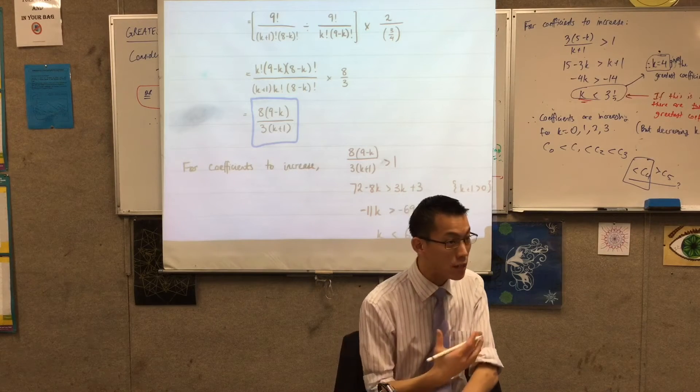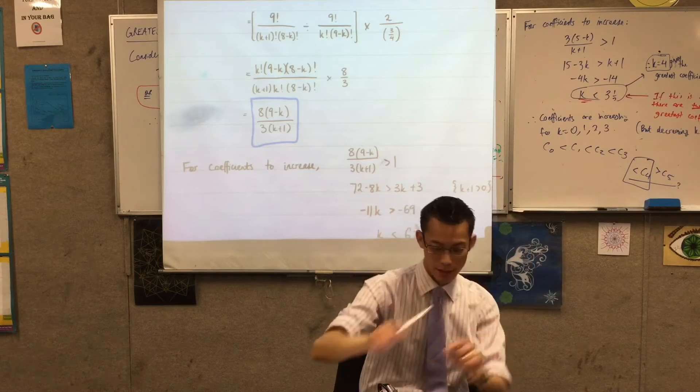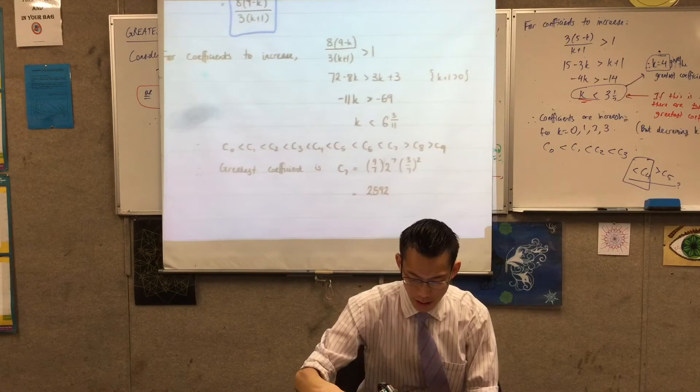But of course the whole point in finding what this ratio is is that I want the ratio to be bigger than one. That means my coefficients keep on increasing. So that's why I've solved this inequality and this is what I've got.